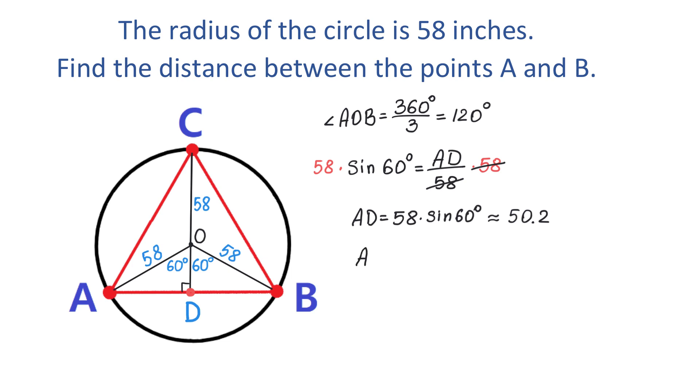So AB equals 50.2 multiplied by 2. Then AB equals 100.4 inches. So in this problem, we had the radius of a circle of 58 inches and we found the distance from A to B and this distance is 100.4 inches. I hope you enjoyed this video.